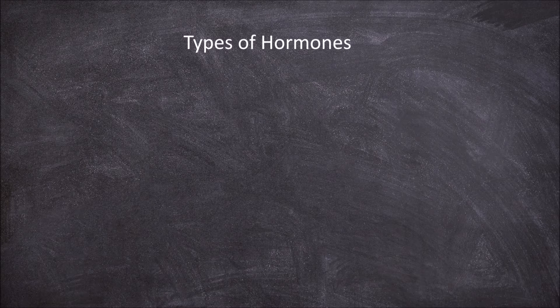In this video we're going to go over the types of hormones. Hormones are a range of signalling molecules found in multicellular organisms. They are made in the glands. From there they are transported throughout the body to specific organs where they regulate bodily functions.